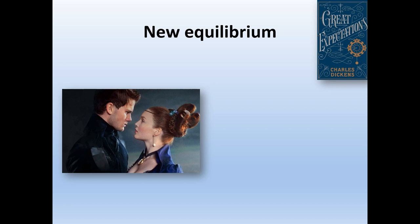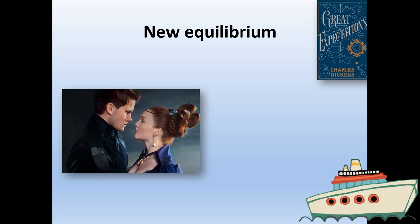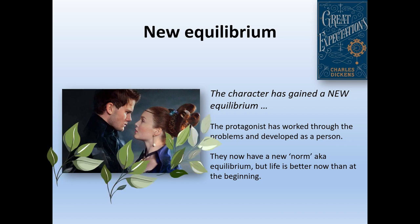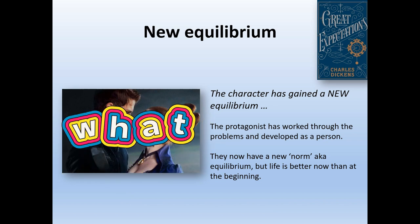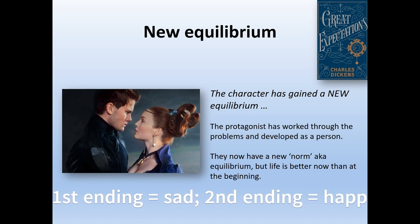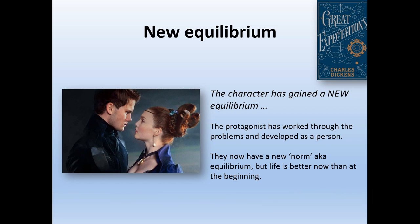A sense of new equilibrium doesn't really emerge until the very end of the novel. Pip travels to Cairo, returns, and meets many old friends along the way. Finally, if we go with the second, more optimistic ending of the novel — and it's worth researching the fact that this novel has two endings — we see Pip return to the ruins of Satis House and reunite with Estella. There's the prospect of them establishing a new life together, creating a fully formed new equilibrium and the chance for a hopeful life with his true love.